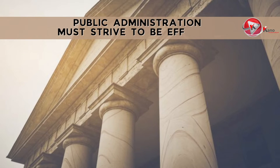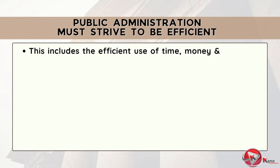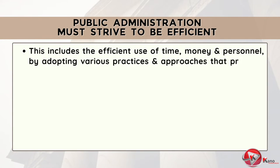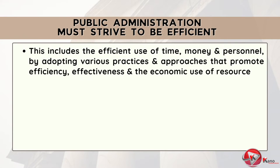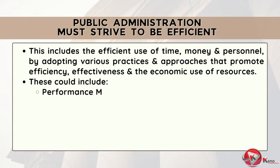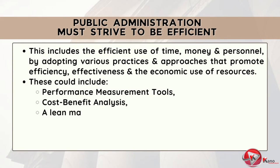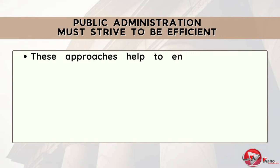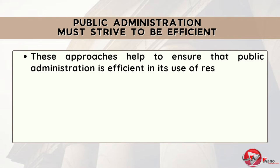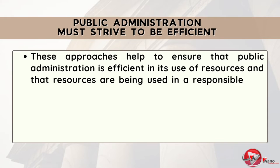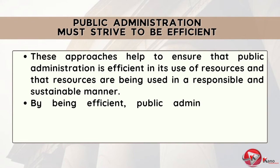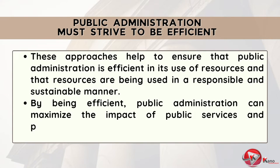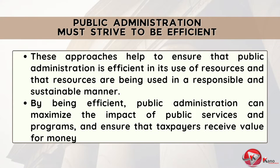Public administration must strive to be efficient in its use of public resources. This includes the efficient use of time, money, and personnel, by adopting various practices and approaches that promote efficiency, effectiveness, and the economic use of resources. These could include performance measurement tools, cost-benefit analysis, a lean management structure, process improvement, automation and technology, as well as proper human resource management. These approaches help to ensure that public administration is efficient in its use of resources, and that resources are being used in a responsible and sustainable manner. By being efficient, public administration can maximize the impact of public services and programs, and ensure that taxpayers receive value for money for their taxes.